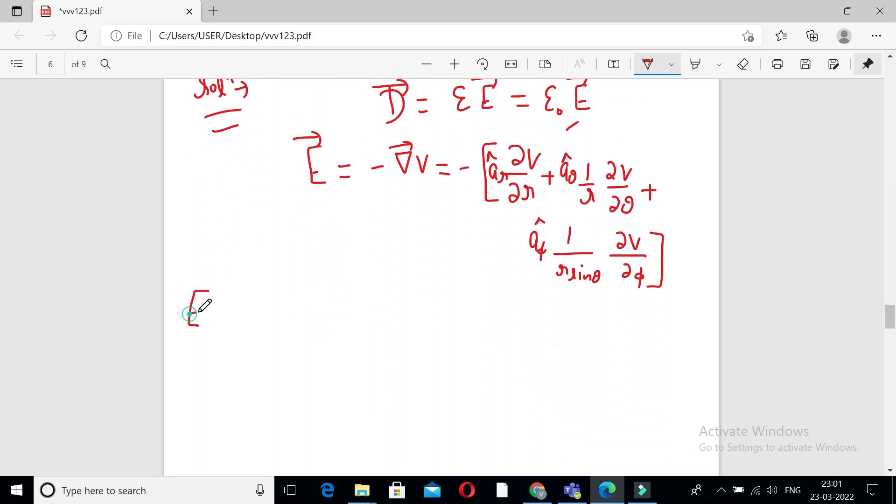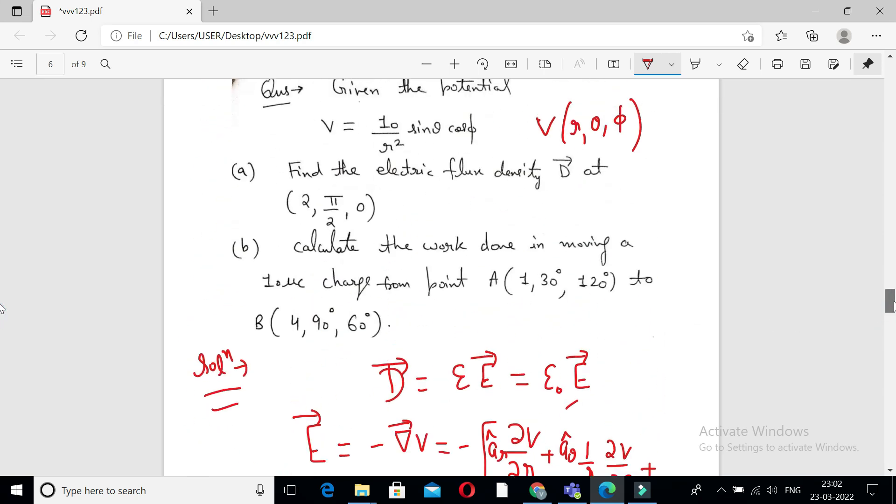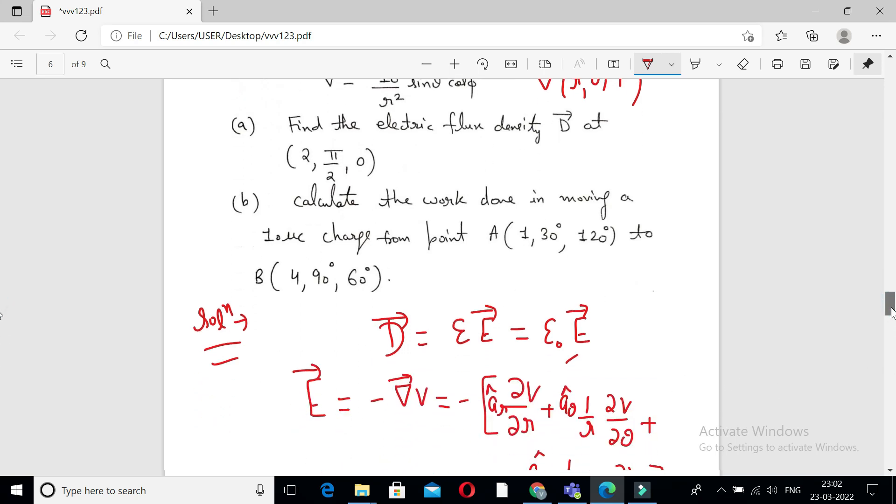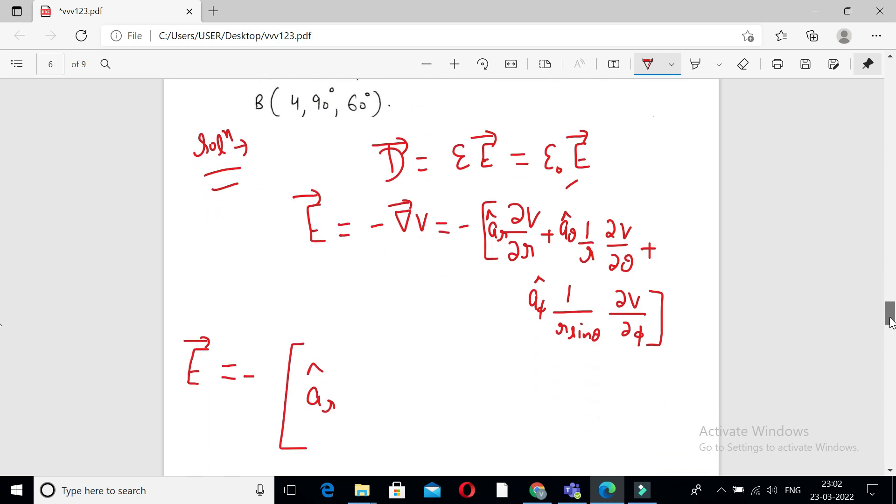Now E vector is equal to minus of A R cap. What is the value of del V upon del R? So we have to differentiate this one with respect to R. So we get minus 2 upon R cube into sine theta cosine phi.